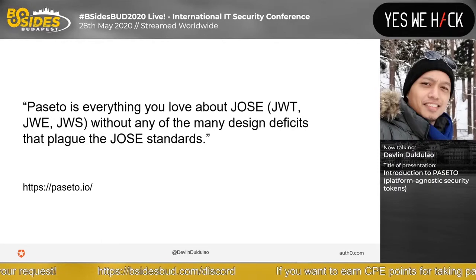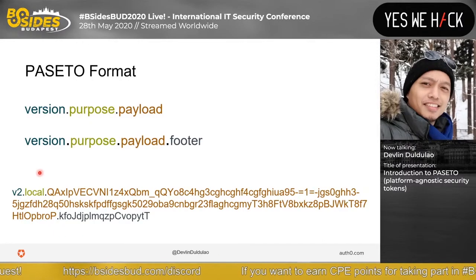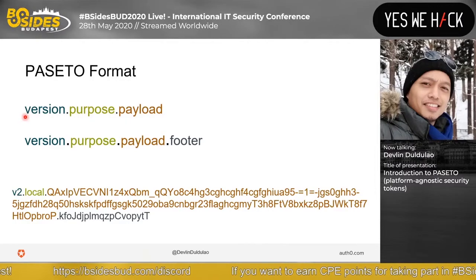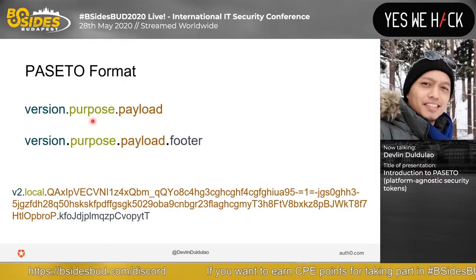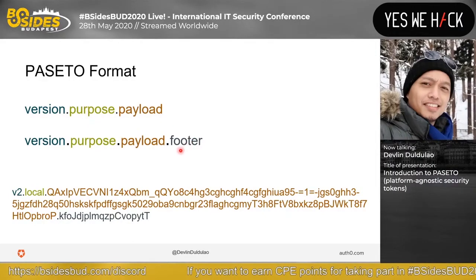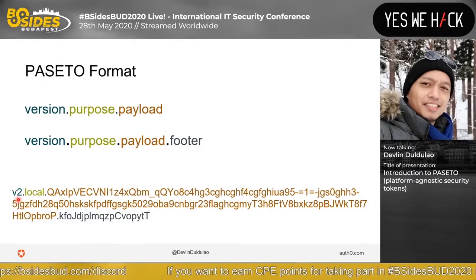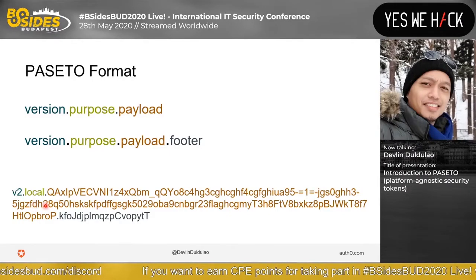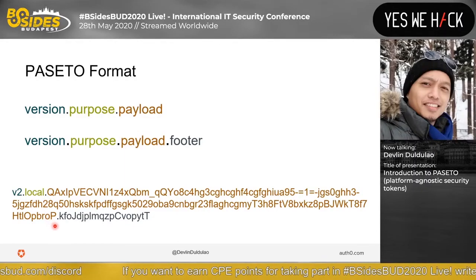Here's an example of a PASETO token. It's divided into three or four parts: a version, a purpose, a payload, and an optional footer. For example: version is V1 or V2, then local, then the payload, and then the footer.